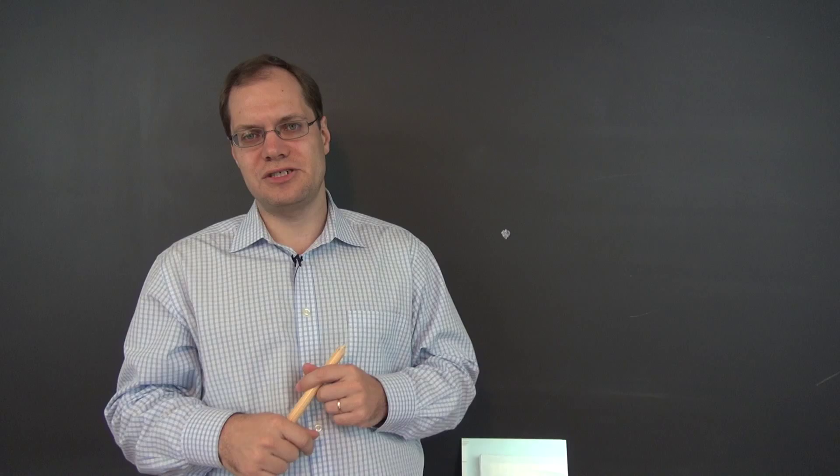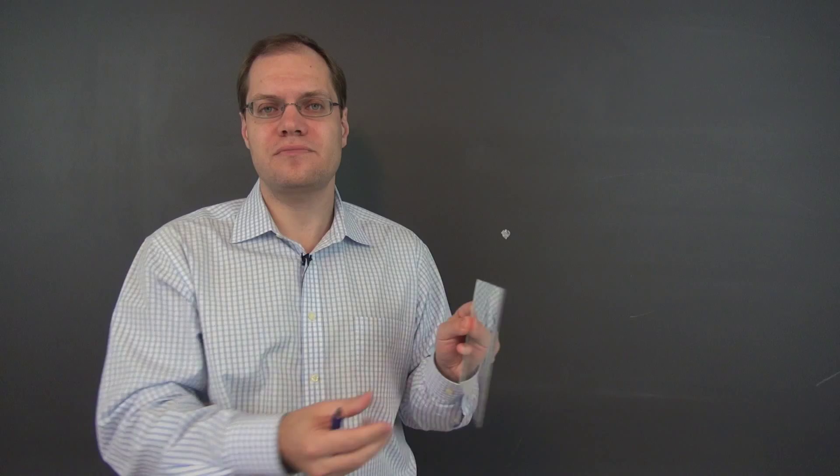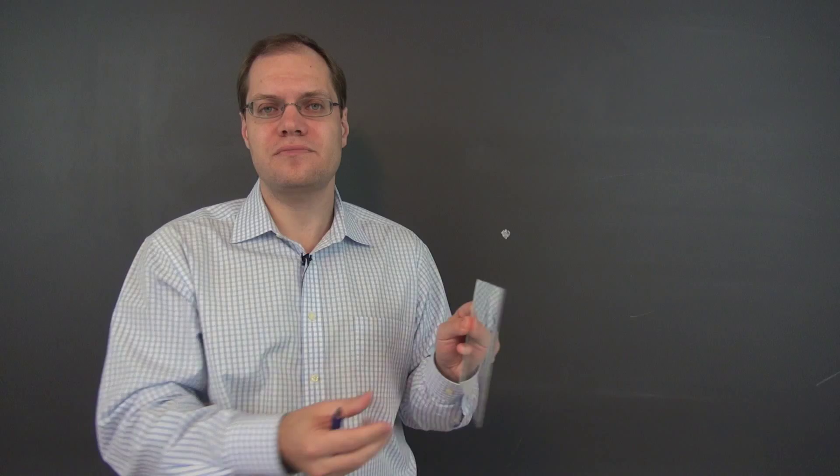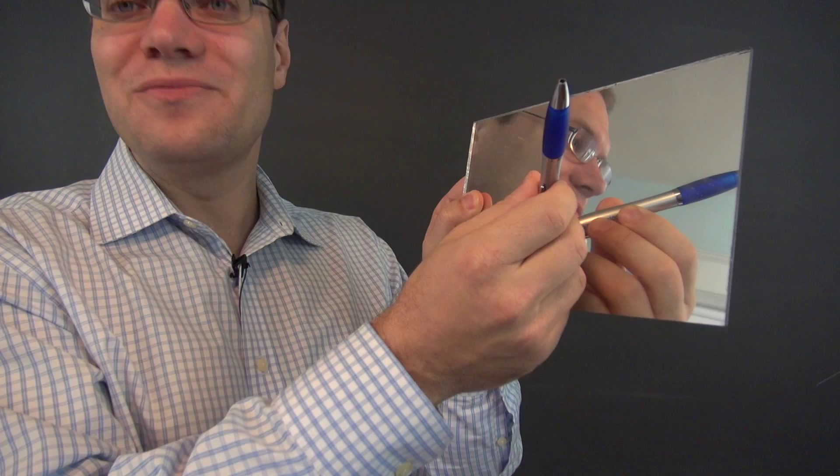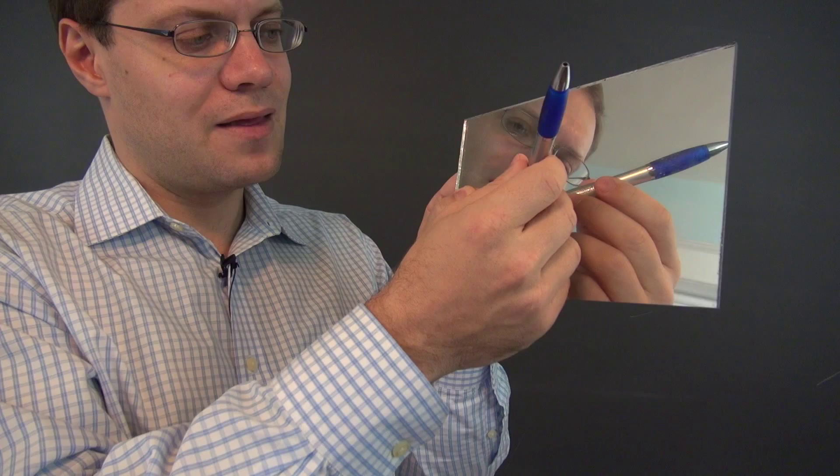This transformation is linear by the same sort of reasoning as we used in two dimensions. So what are its eigenvalues and eigenvectors? It may be easier to see using a mirror. With the mirror, you can get a very good idea of what the transformation does — let the pen represent the vector, and its reflection is its image. That's where the terminology of 'image' comes from.